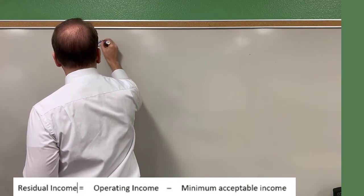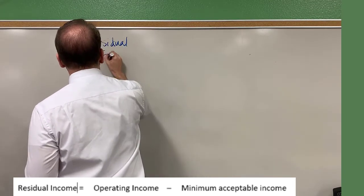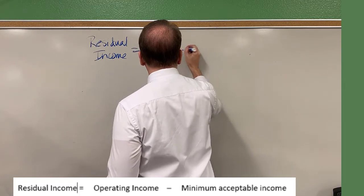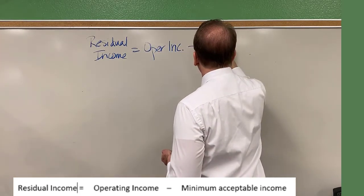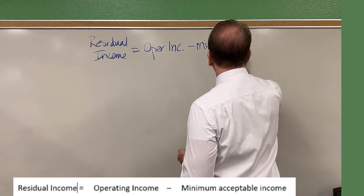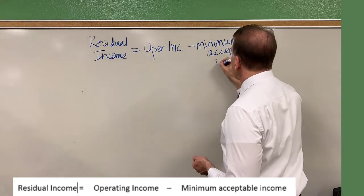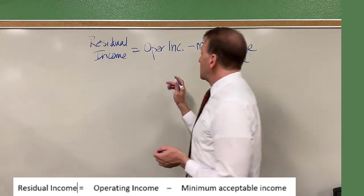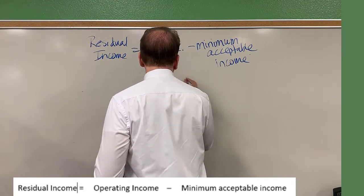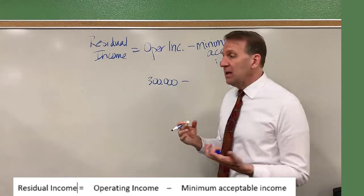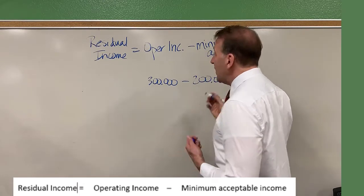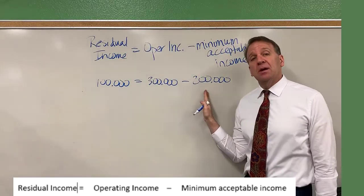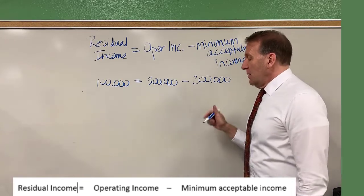This can be done through something called residual income. Residual income equals our operating income minus a minimum acceptable income level. So if our operating income is $300,000 and our minimum acceptable income for that time period is $200,000, then we do have residual income because we're earning more income than our minimum acceptable for that time period.